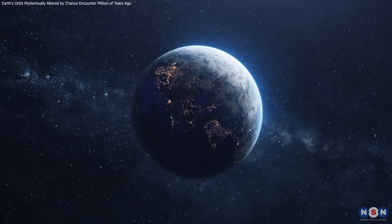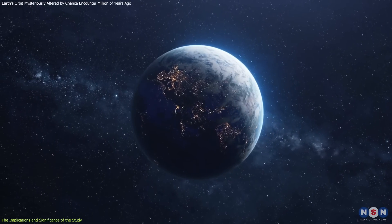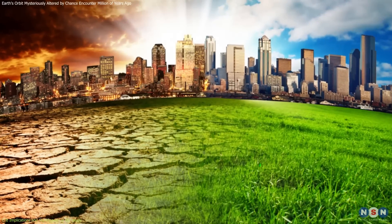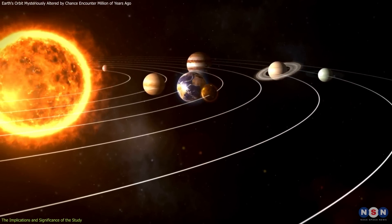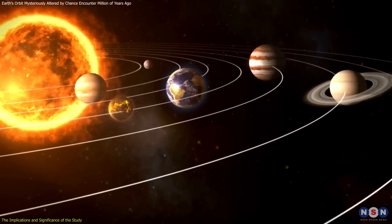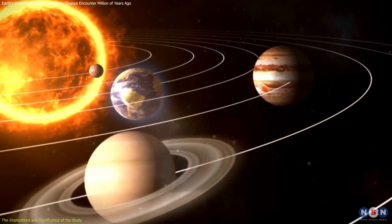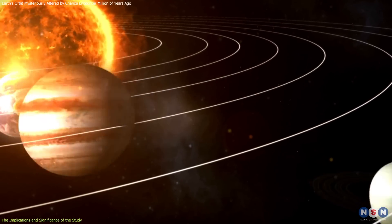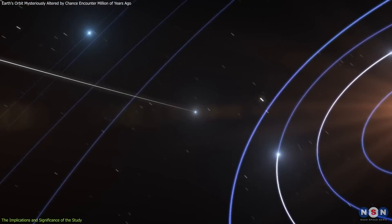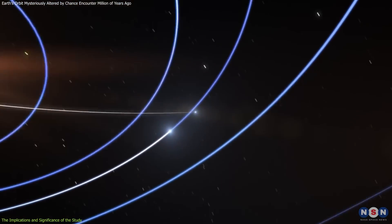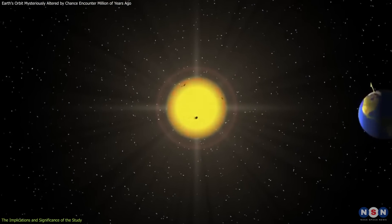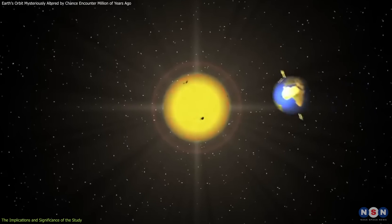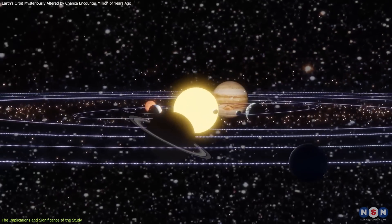So what does this study mean for our understanding of Earth's orbital history and its connection to climate change? Well, it means that we have to consider the possibility that Earth's orbit was not only influenced by the gravitational interactions of the planets within the solar system, but also by the external perturbations of passing stars. This adds a new layer of complexity and uncertainty to the orbital behavior of Earth and the other planets over long timescales.